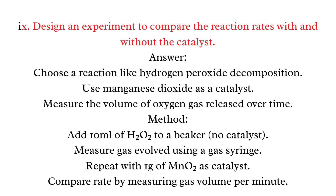Long Q9: Design an experiment to compare reaction rates with and without a catalyst. Answer: Choose hydrogen peroxide decomposition and use manganese dioxide (MnO₂) as a catalyst. Measure the volume of oxygen gas released over time. Add 10mL of H₂O₂ to a beaker without catalyst, measure gas evolved using a gas syringe, then repeat with 1g of MnO₂. Compare rate by measuring gas volume per minute.